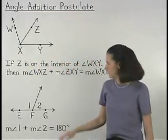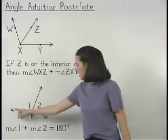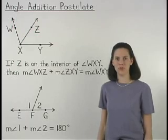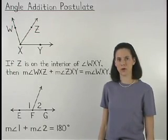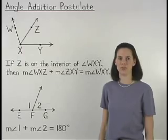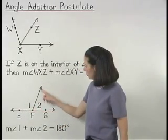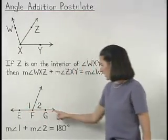In the second figure shown, we can assume that angle EFG is a straight angle, which means that it measures 180 degrees. Therefore, the angle addition postulate tells us that the measure of angle 1 plus the measure of angle 2 equals 180 degrees.